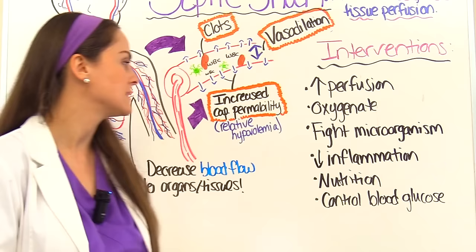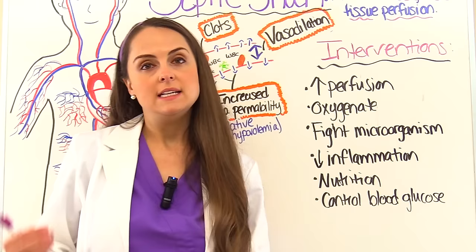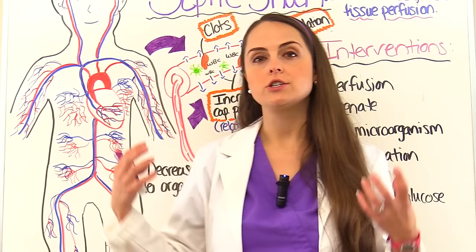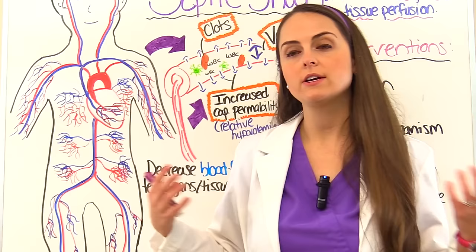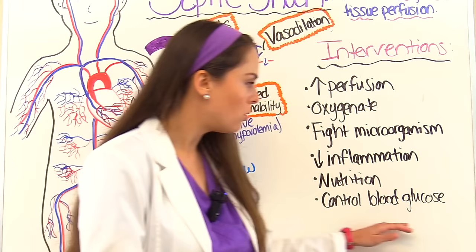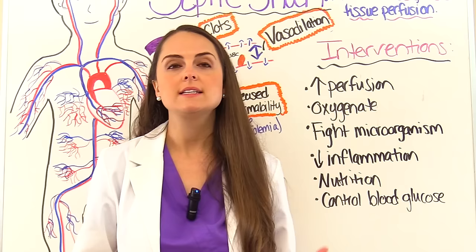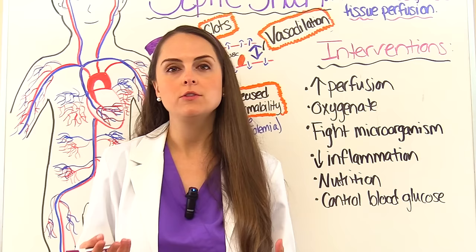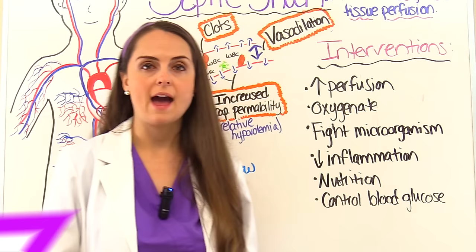Starting nutrition early through feedings can increase gut integrity, help prevent stress ulcers, and improve patient outcomes. In addition, we want to control blood glucose — hyperglycemia alters the way the immune system works, so we want to keep blood glucose controlled. The patient may need to be on an insulin drip to achieve that. Now let's put all that information into an easy-to-remember mnemonic: SEPTIC SHOCK.